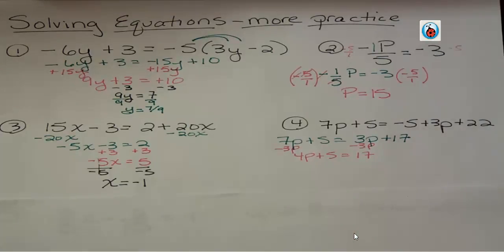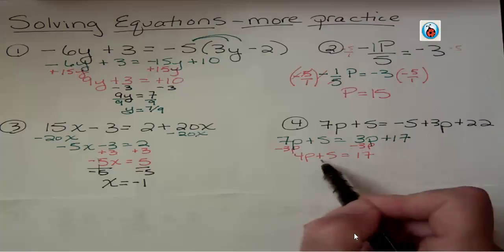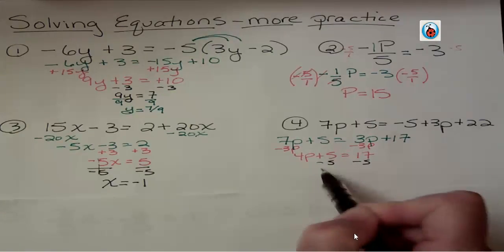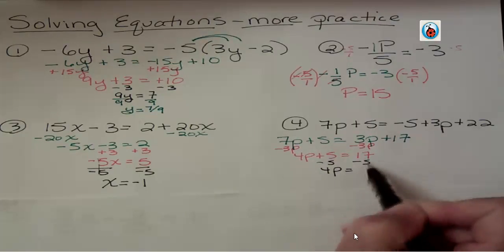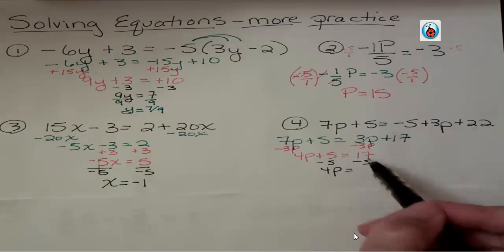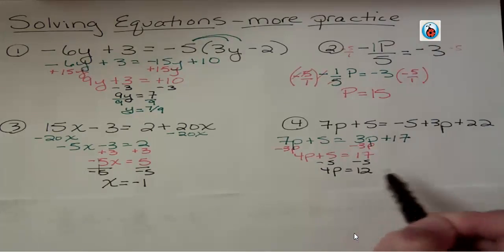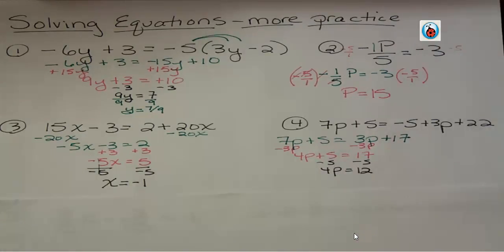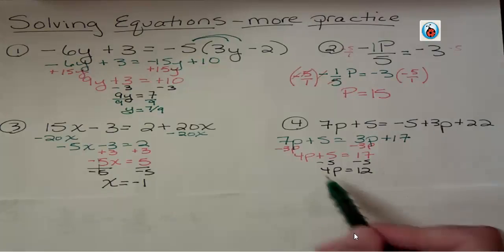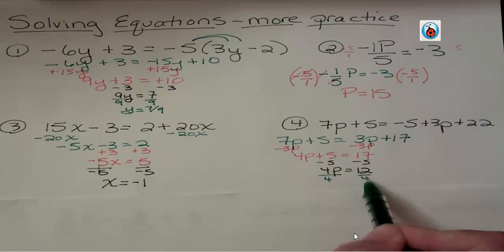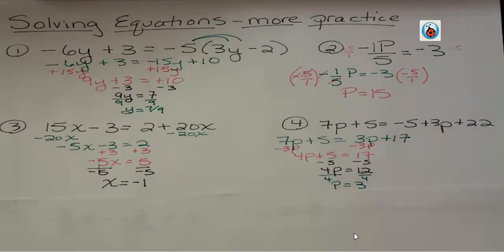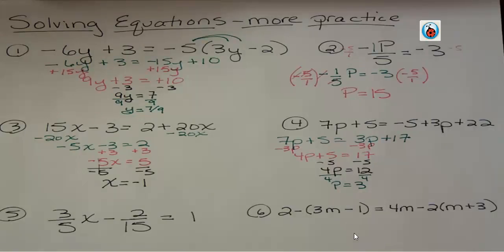4p plus 5 equals 17. Now I'm going to get rid of that positive 5 by subtracting 5 from both sides. I'm always lining up like terms, which means same variable, same power, when I subtract. And I always have to do it to both sides. 17 minus 5 is 12. Finally, I can figure out what the answer is by getting rid of the coefficient, dividing both sides by 4. I get p equals 3. What if I don't know if it's right? Plug it into your equation and see.